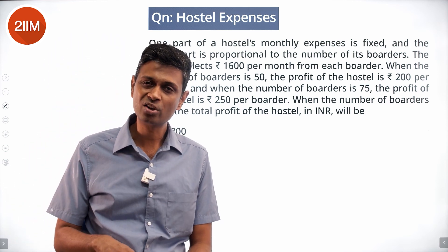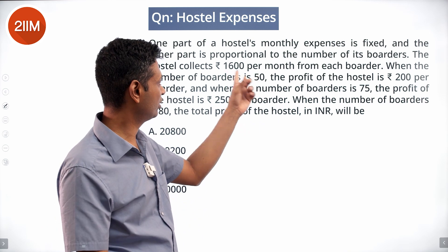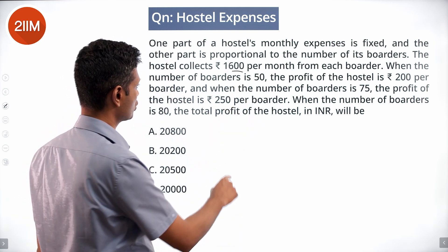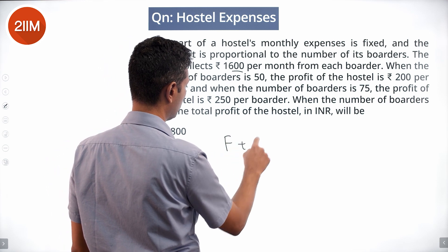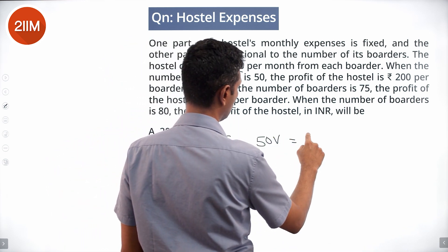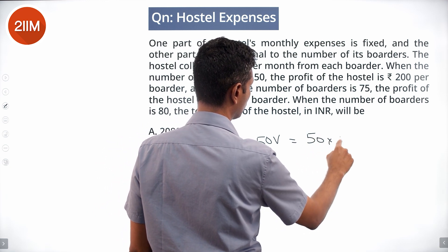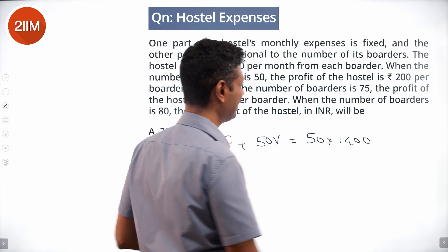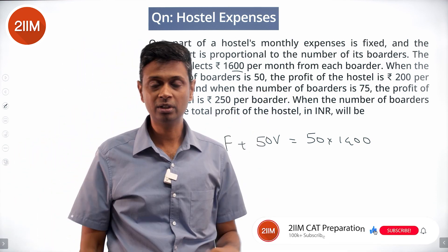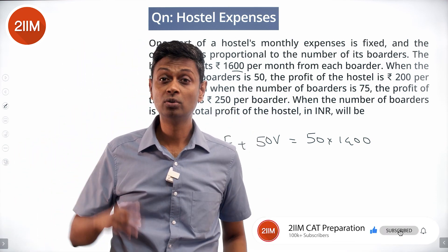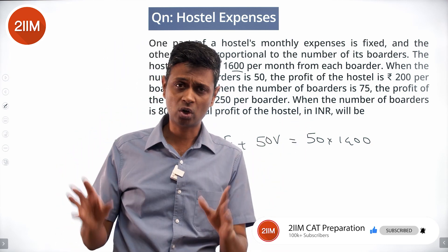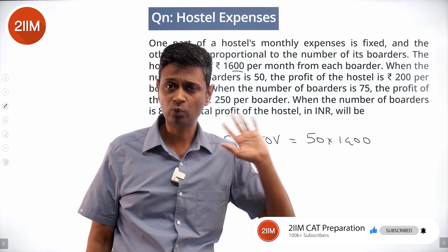Their cost is Rs. 1400 per boarder — they collect 1600 and make a profit of 200, so their cost is 1400. There are 50 boarders, so 50 times 1400 is the total cost. Therefore: F plus 50V equals 50 times 1400, which is 70,000.